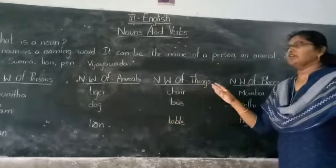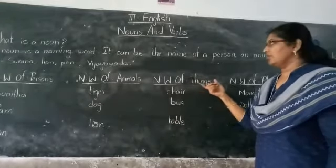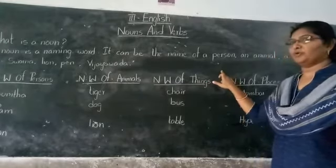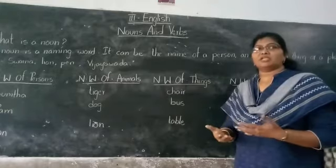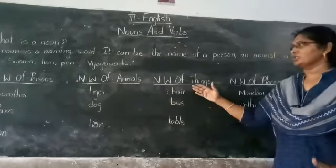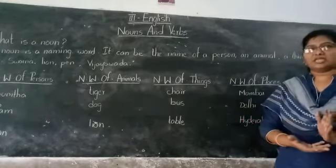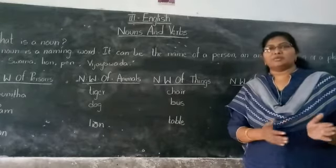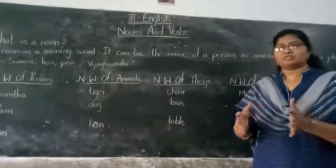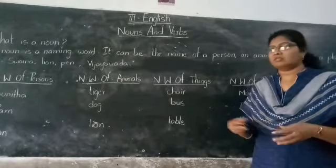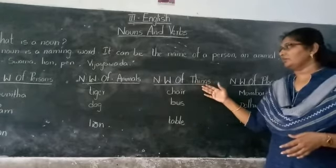The third category is naming word of things. Things means the objects around us. In your surroundings, everything you can see has a name — those names come into things. Things include daily-use objects: your stationery, books at home, things a teacher uses. Also, some forms of transportation can also be called things. These are all called naming word of things.